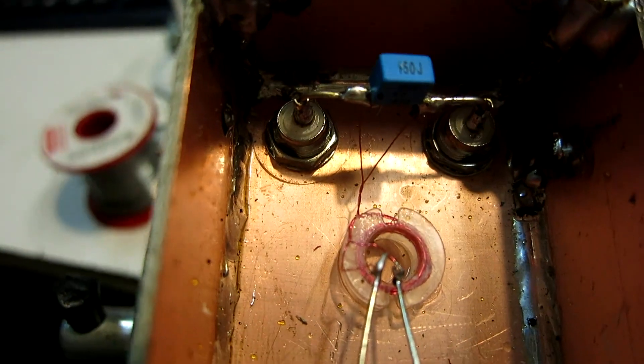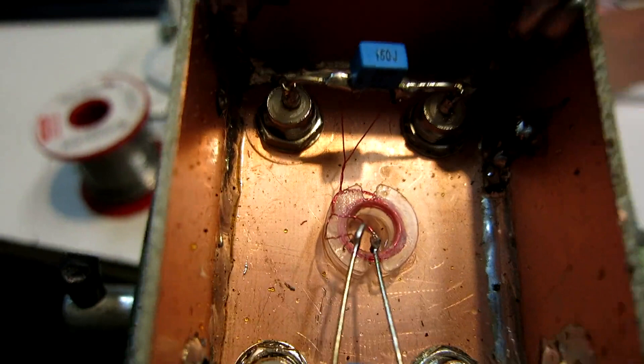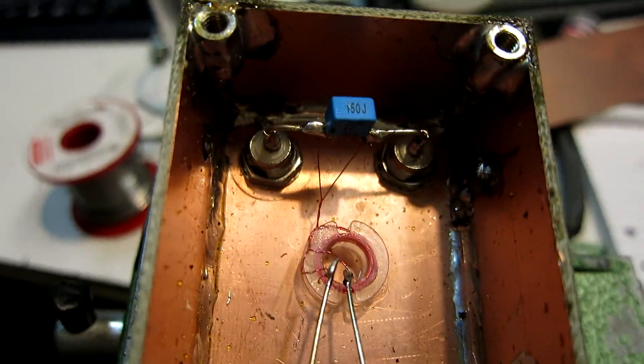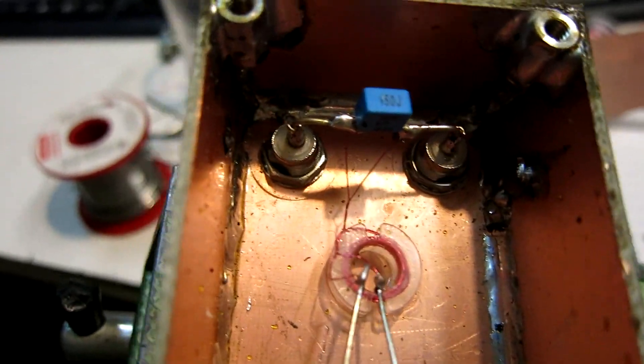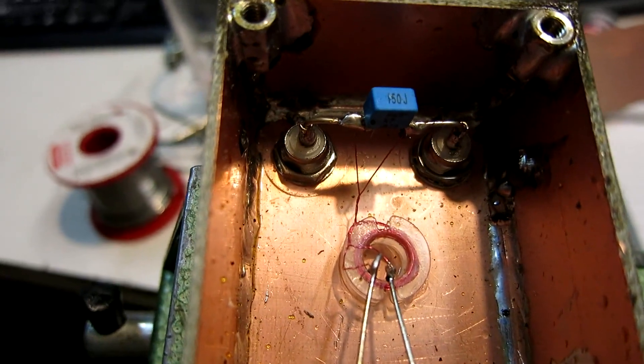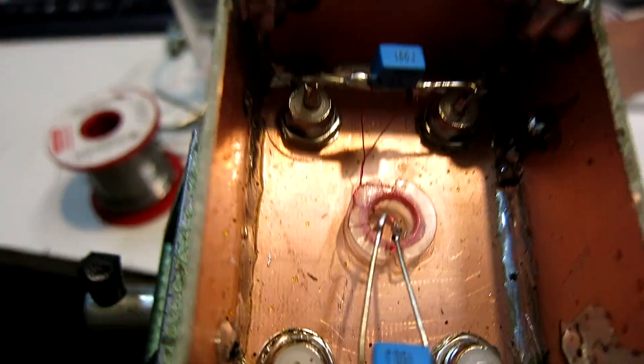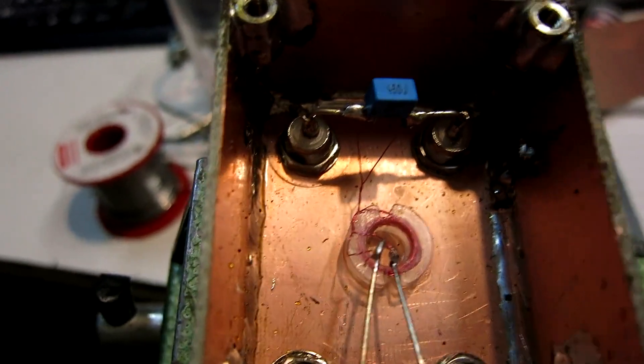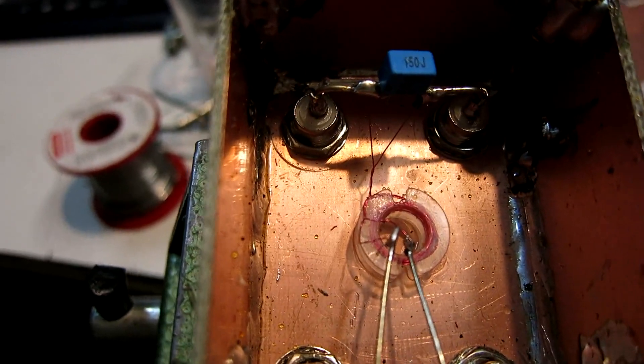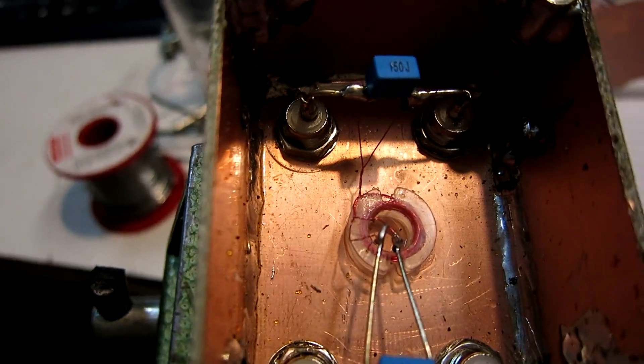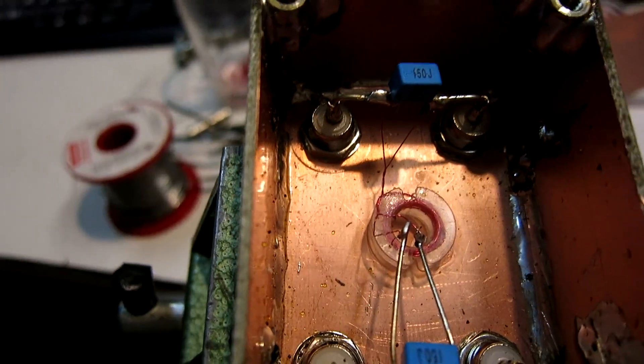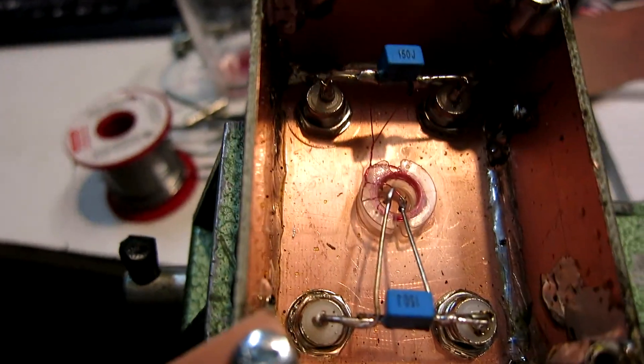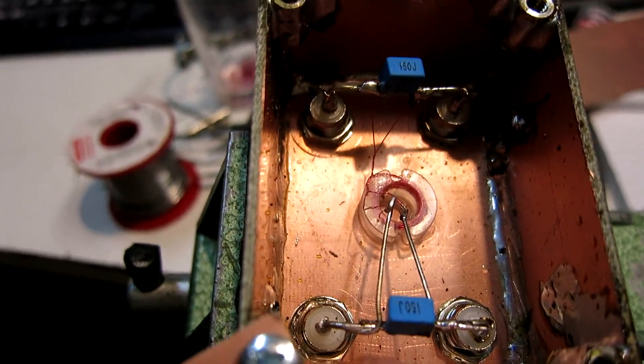But normally you find people use ferrites here. And I don't do that, because I use this frequency doubler to measure close range noise. And ferrites get modulated by the fields from my computers, leaking low frequency fields. And that destroys the measurements I'm going to do later on with this doubler.